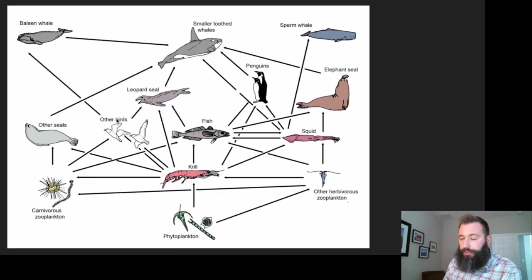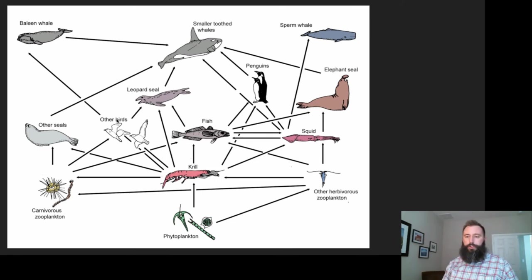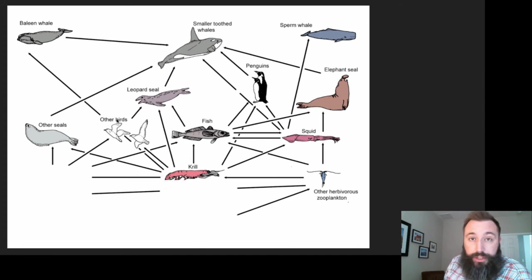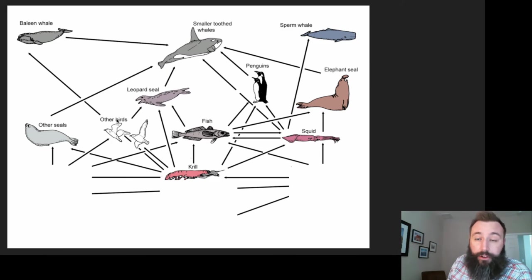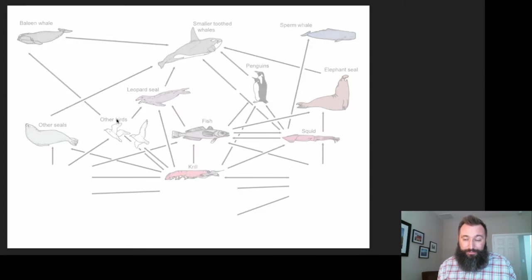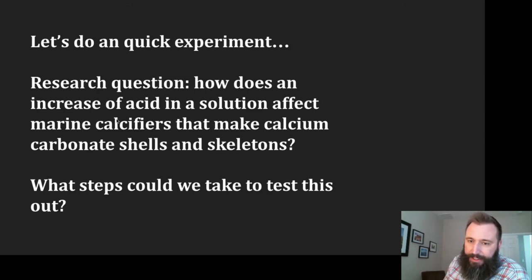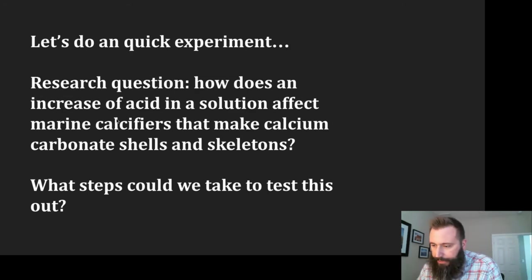This is one reason why we should ensure we reduce instances of ocean acidification. If something happened to the base of this food web and we removed or reduced some of these individuals, we might have profound effects — either direct or indirect — on the composition of all the other organisms within this community. Let's do a quick experiment. The research question is: how does an increase in acid in a solution affect marine calcifiers that make calcium carbonate shells and skeletons?